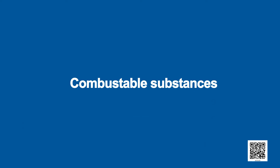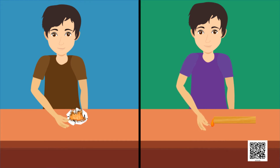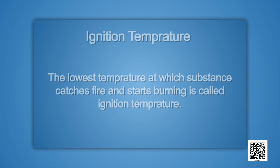A boy takes a burning matchstick towards a piece of paper and a second boy takes a burning matchstick towards a piece of wood, but the wood does not catch fire easily whereas paper catches fire and starts burning. This means the piece of wood does not reach its ignition temperature. The lowest temperature at which a substance catches fire and starts burning is called its ignition temperature. Different substances catch fire at different temperatures.